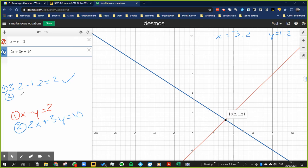Looking at equation 2, 2 times 3.2 which is 6.4 plus 3 times 1.2 which is 3.6 is equal to 10. Yeah it is, that's correct. So they're definitely right. Desmos is telling us the right answer, that's good.